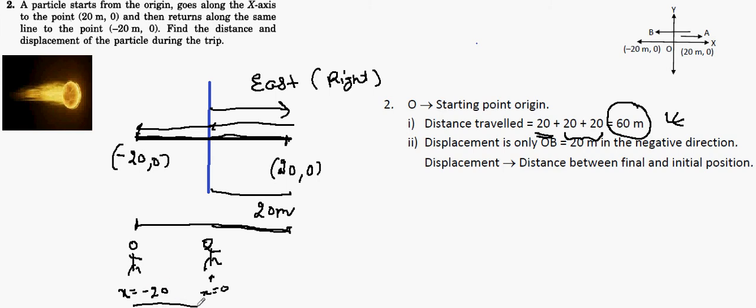So, if you talk about the displacement, the displacement magnitude is nothing but 20 meters along the negative direction. You can say displacement is only 20 meters in the negative direction of the axis. Why? Because displacement is